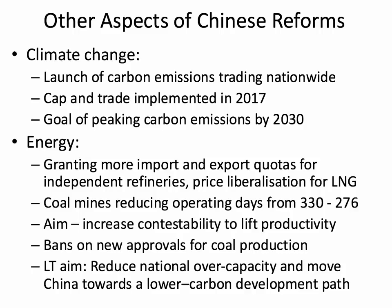Looking at specific examples of reform in climate change: the launch of the carbon emissions trading system is quite significant — a cap and trade system introduced in 2017, with the goal of having carbon emissions peaking by 2030. Most economists argue that a cap and trade system probably won't achieve that, and China may well need to move down the path of a carbon tax. In the energy sector, the government is encouraging more export quotas for independent refiners, opening up the market for liquefied natural gas, and cut the number of days coal mines can operate — which led to a 10% decline in coal output. Essentially, they're trying to bring down excess capacity in the energy sector and move China towards a lower carbon path, with renewable energies being key.